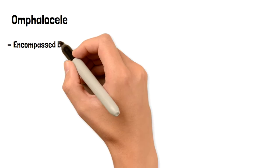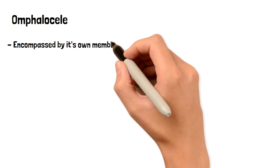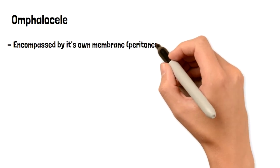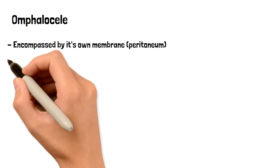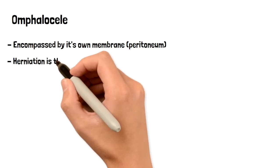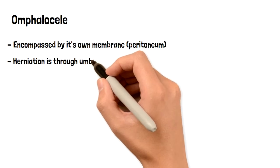Omphalocele. This is a herniation but this herniation has its own membrane. It's encompassed within its own membrane called the peritoneum. In this herniation, it comes out of the umbilical cord specifically.